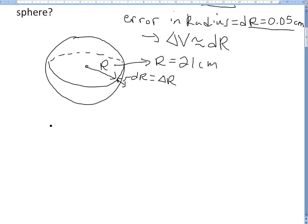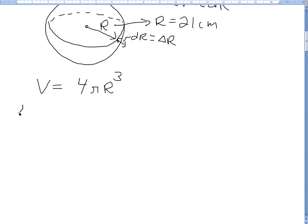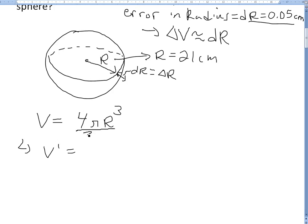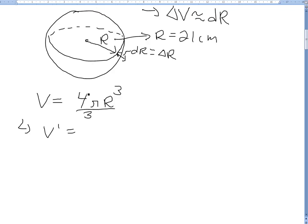So what we could write is, well we know that for volume of a sphere this equals V, volume of sphere equals 4/3 π R³. And then if we write the derivative of this we know that V' is going to be equal to... actually I made a mistake, it's 4 over 3, so this is the formula for volume of sphere.